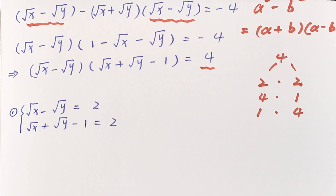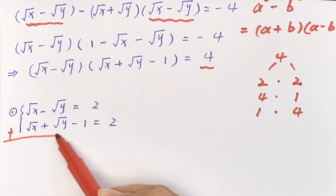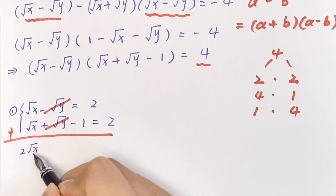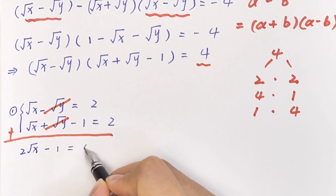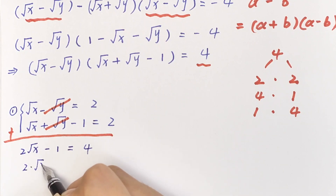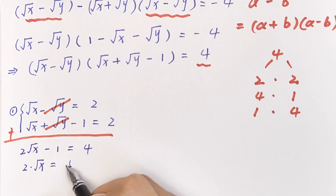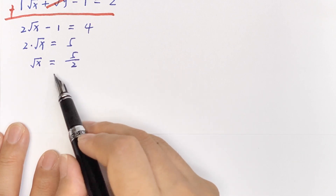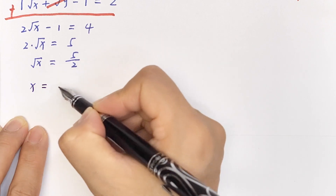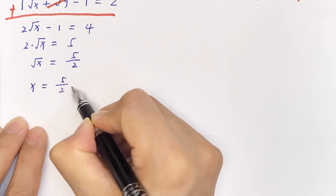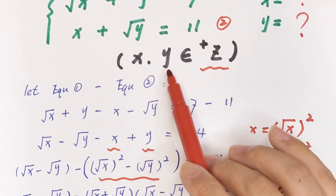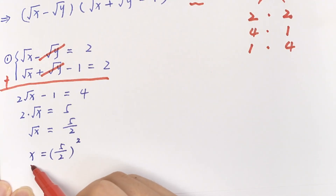Adding these two sub-equations, the square root of y terms cancel. We get 2 times square root of x minus 1 equals 4, so 2 times square root of x equals 5, giving square root of x equals 5 over 2. Therefore x equals 25 over 4. But since x must be a positive integer, this case is invalid.